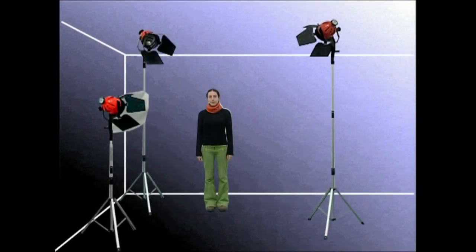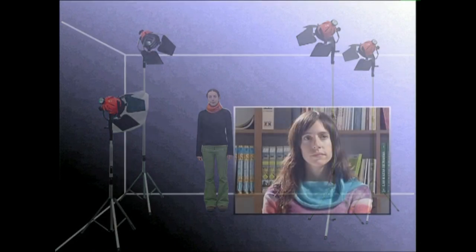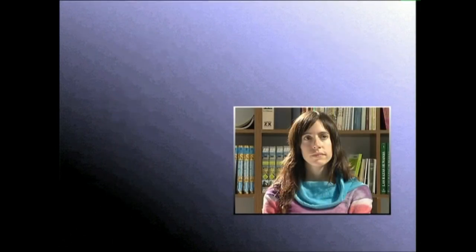Laugarren argi iturria, atzeko argiarekin batera, pertsonaiak edo objektuak ondotik aski aldentzen ez direnean erabiltzen da. Baita ez zenaren irudi-dimentsioak irudira aldatu nahi direnean ere. Laugarren argi iturria erabiltzeak kontu handiz lan egitea eskatzen du, batez ere zorroztasun handiz.